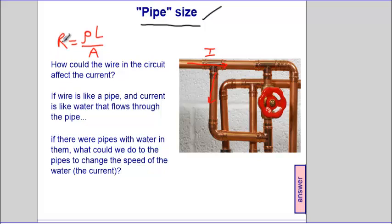So if we wanted to decrease, let's just say decrease the resistance, make water go faster, we could decrease the resistivity, decrease the length, and increase the area.